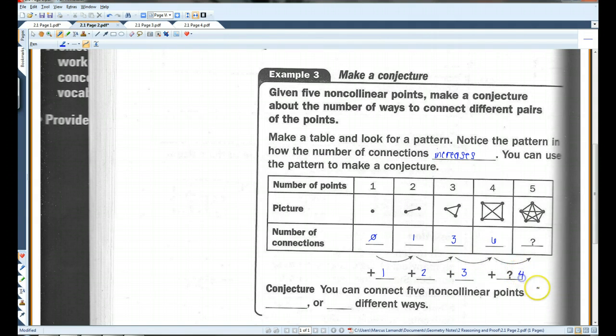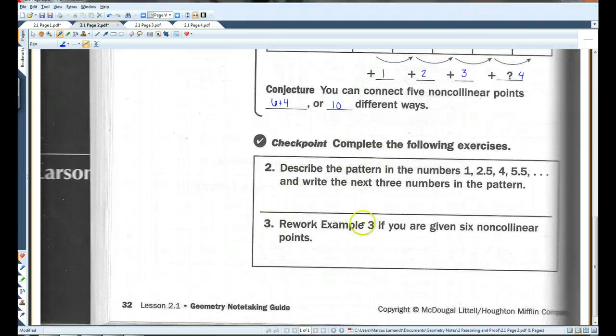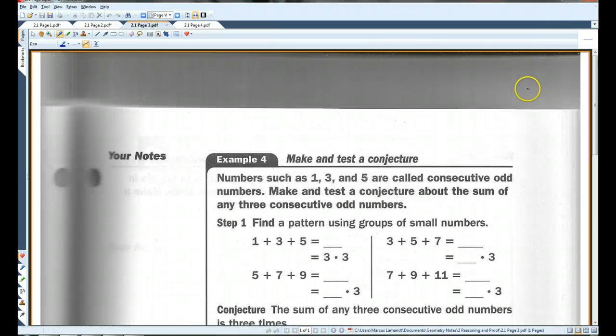Probably, we're going to add four to this one and get ten. So, you can connect five non-collinear points, six plus four, or ten different ways. I'm going to let you guys do this checkpoint. Let's go on to page three.